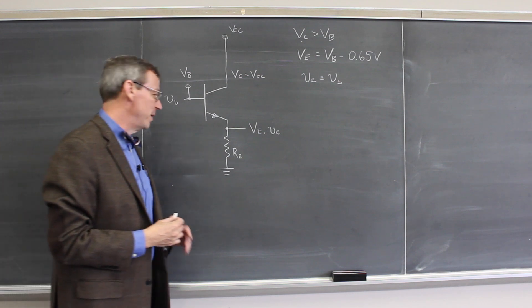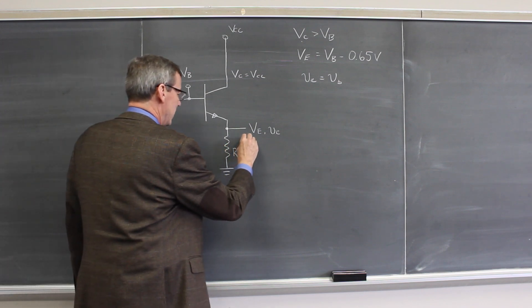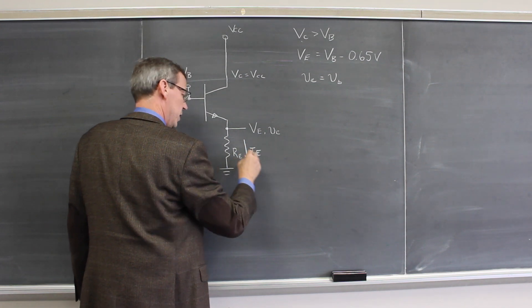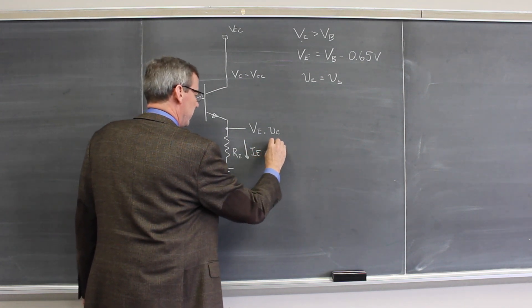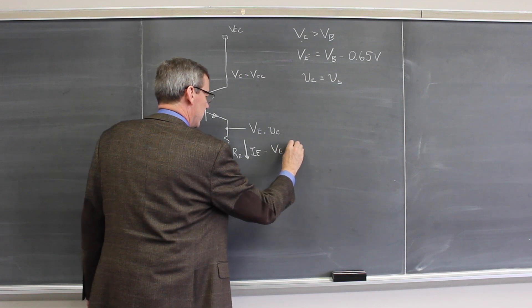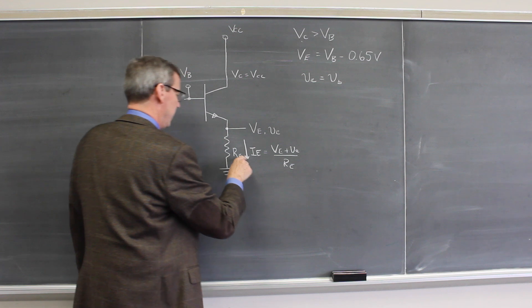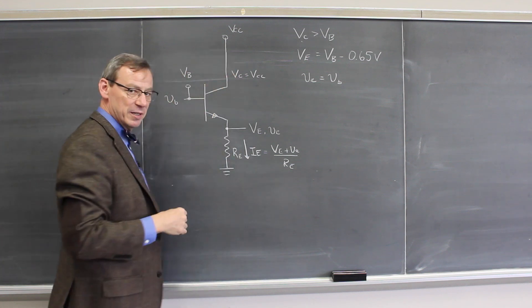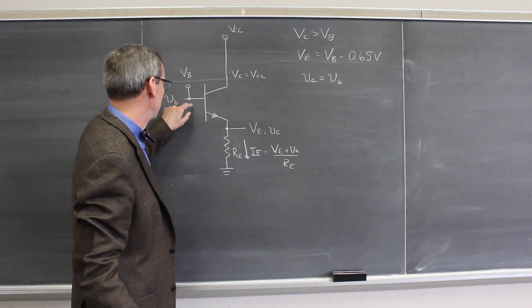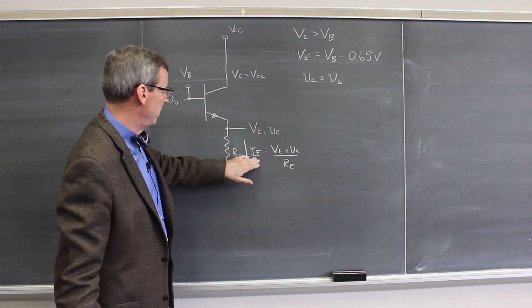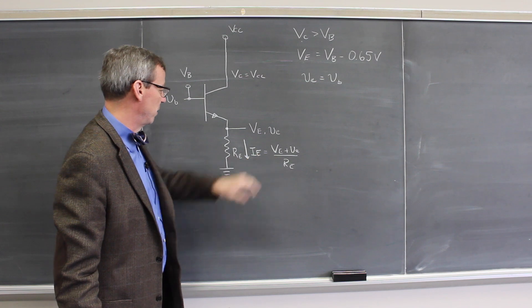The last thing to remember is that the current flowing through this emitter resistor here is VE plus VE over that resistor, and that is approximately the current flowing into the collector. Remember the base current is about 1% of that, so most of the current is here, so the emitter current and the collector current are both given approximately by that.